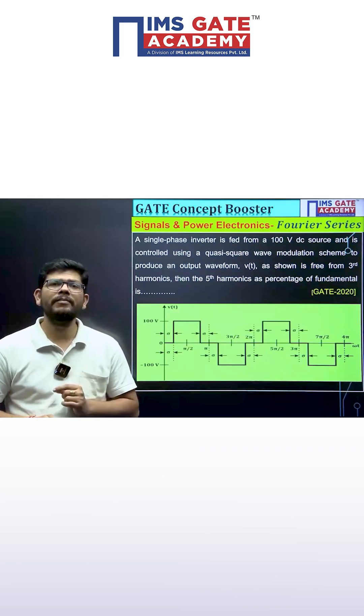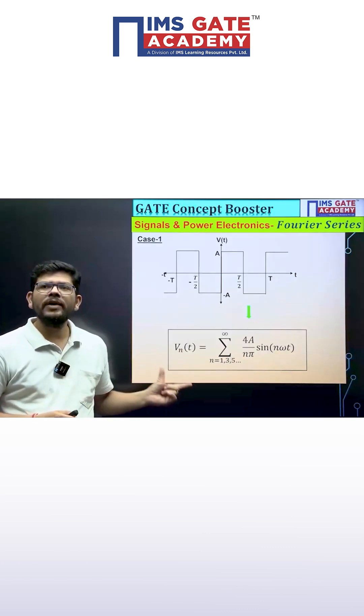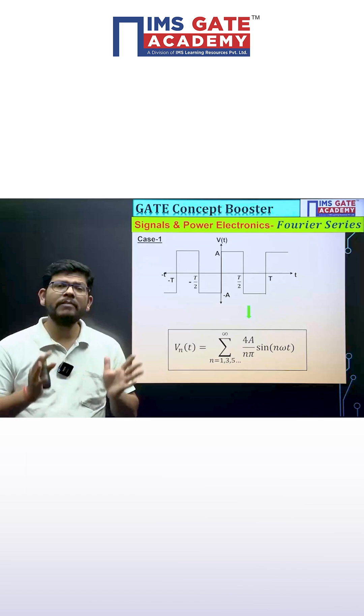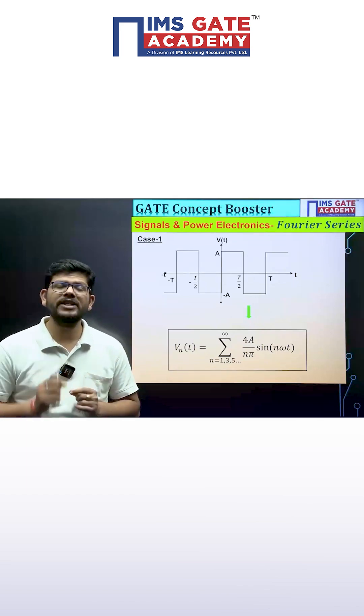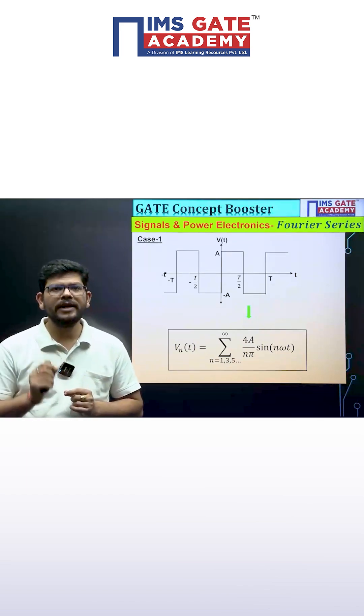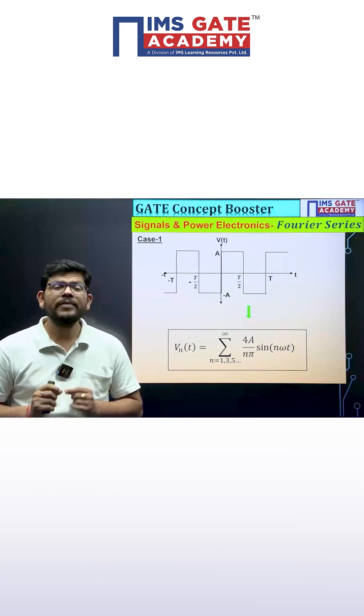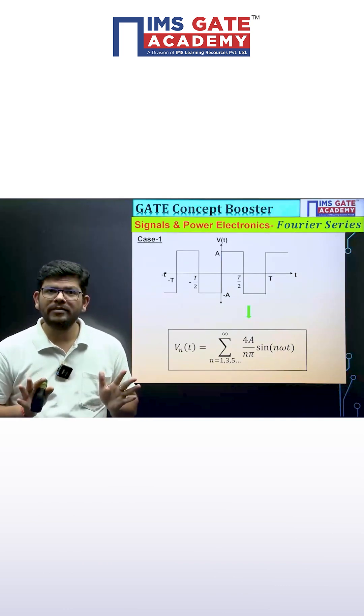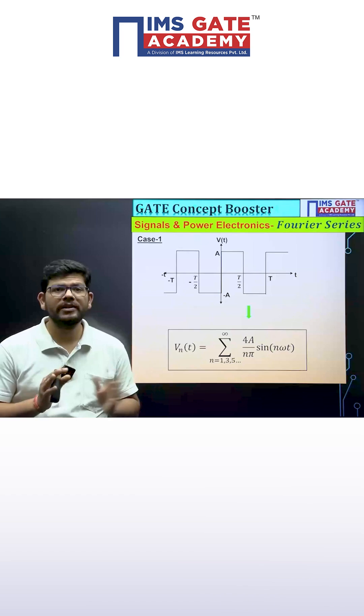You have to remember two Fourier series expressions. One for the square wave. If you have been given a perfect square wave, the expression is four times the magnitude upon n pi sine n omega naught t, where only odd harmonics will be existing and n values will be one, three, five and so on.